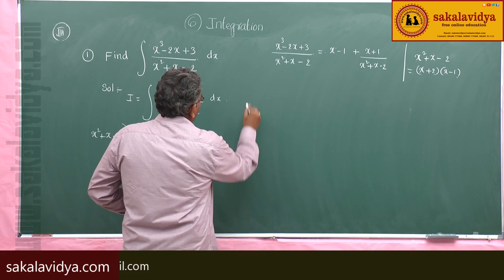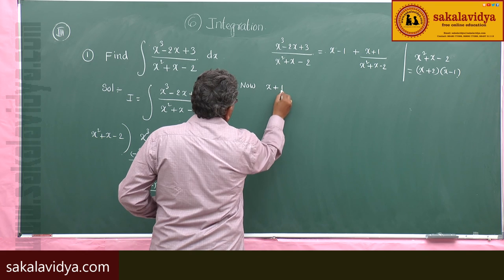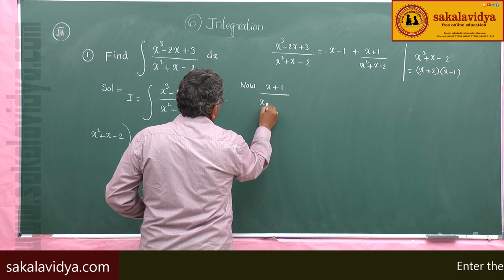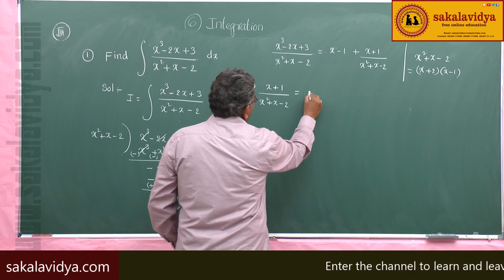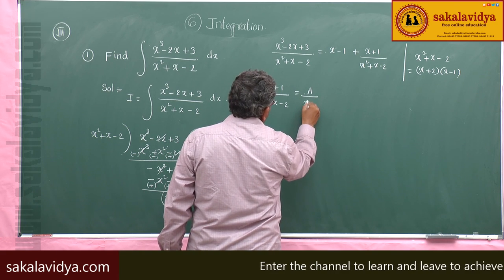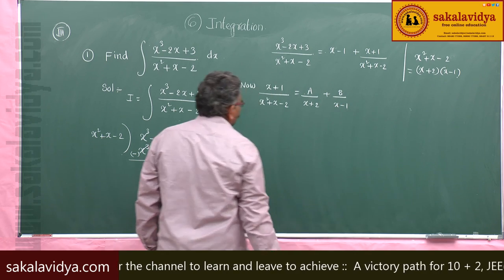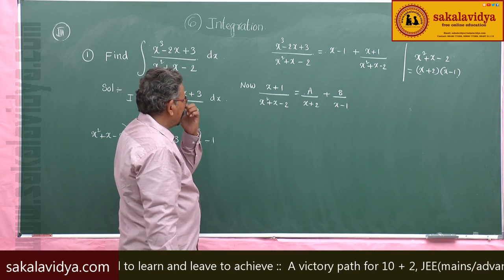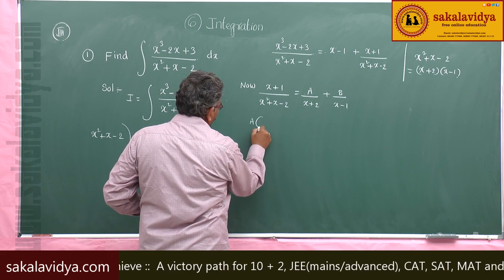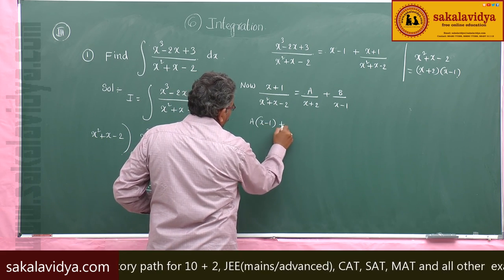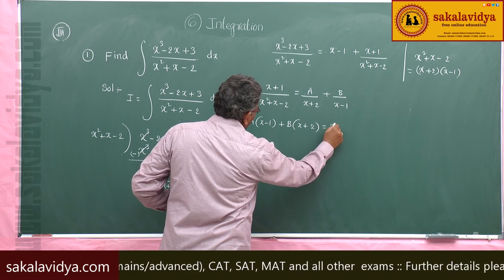We can observe that x² + x − 2 can be written as (x + 2)(x − 1). Now we find the partial fractions: (x + 1) / (x² + x − 2) equals A/(x + 2) + B/(x − 1). Multiplying both sides by (x + 2)(x − 1), we get A(x − 1) + B(x + 2) = x + 1.